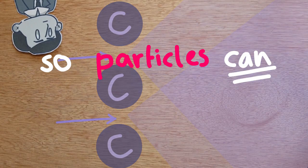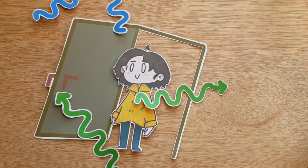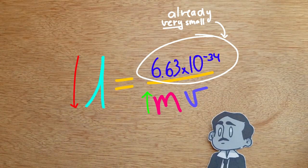But if matter can act like waves, you may be thinking, why can we never see ourselves diffract? Let's look at the equation again. As you increase the mass, you decrease the wavelength. For macroscopic objects, the wavelength is too small to visibly diffract around anything. This effect is only really visible at the quantum scale.